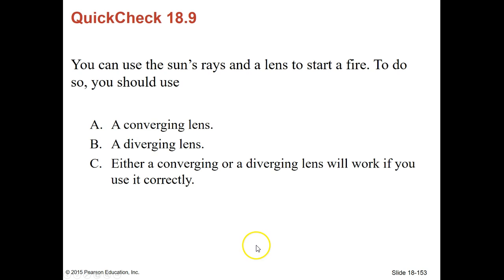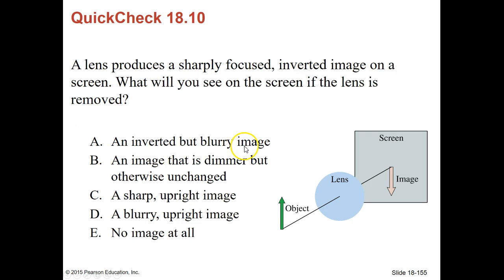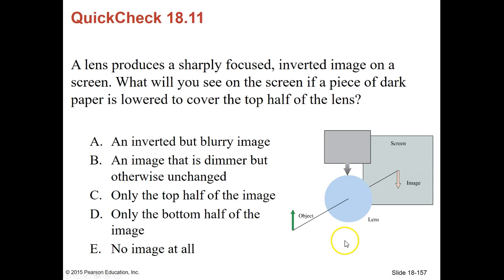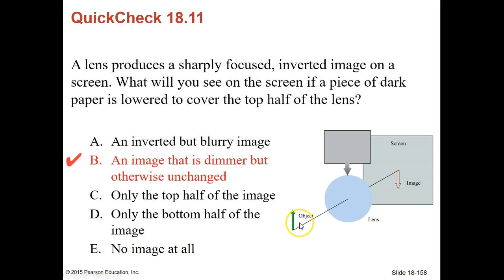You can use the sun's rays to start a fire — some kids use them to burn ants on the sidewalk. They want to know what kind of lens to use so that all the rays come together, so we've got to use a converging lens. A lens produces a sharply focused inverted image on a screen — what will you see on the screen if the lens is removed? You would not see any image at all because the light's not focused as it goes through. If a piece of dark paper is lowered to cover the top half of the lens, you'll see an image that will be dimmer, but otherwise unchanged — enough of the lens remains to bend light from the top to the bottom of the object, but not all of it, so it will be dimmer.